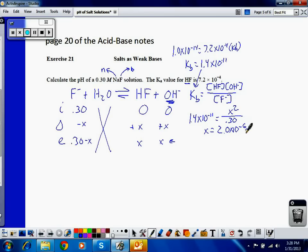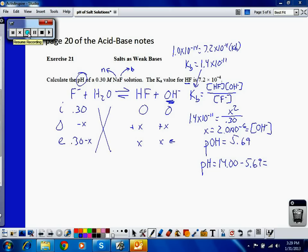Now, that X is equal to the hydroxide ion concentration. But I want a pH, I don't want a hydroxide ion concentration. So I think the easiest way to do this is to first calculate the pOH of the solution, which is 5.69. Which means the pH of the solution is equal to 14 minus the pOH, which equals 8.31.